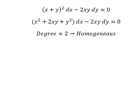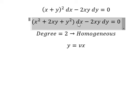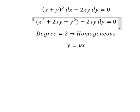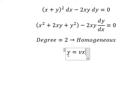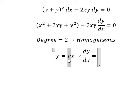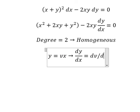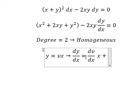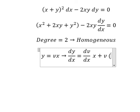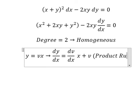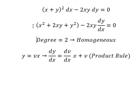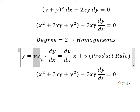We put y equal to vx. For this one we need to divide both sides by dx. Now we need to do the derivative for both sides. For the derivative of v, we have dv over dx multiplied by x. For the derivative of x, we have 1, so we have v. This is about the product rule of the derivative.